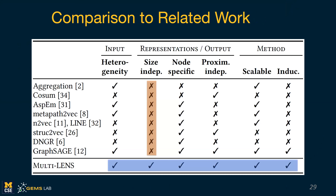The main difference from prior works on representation learning and node embedding is that we're trying to learn a size-independent representation, while all the other works on node embedding learn one representation per node. So if we have a lot of nodes, there are a lot of representations being learned.